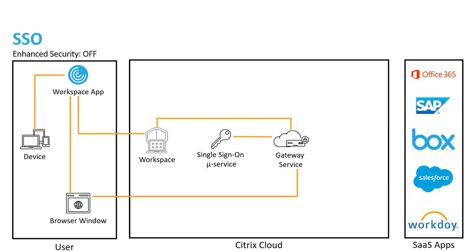The local browser takes that, is redirected to the SaaS app logon page where that assertion is presented. The SaaS app then contacts the gateway service to validate that assertion from the user and successfully authenticates the user.